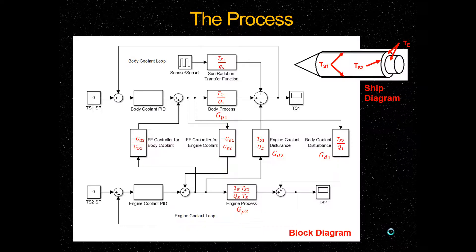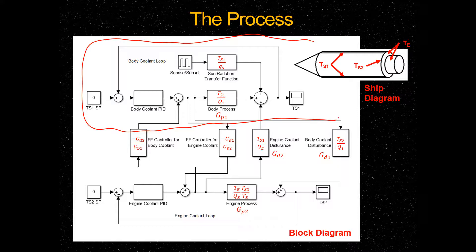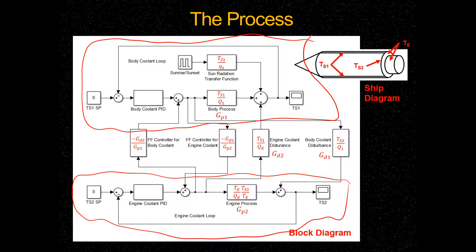This next diagram shows the block diagram that we used. The top of the block diagram right here, this is the loop around surface one, and this is the coolant loop around surface two. We were trying to control these two temperatures right here, temperature of surface two and temperature of surface one.